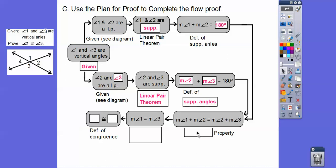Since they both equal 180, we use the substitution property or transitive property — the book prefers transitive. Then, to get from angle 1 plus angle 2 equals angle 2 plus angle 3, we subtract angle 2 from both sides — subtraction property. Then by definition of congruency, angle 1 is congruent to angle 3. That's our prove statement.